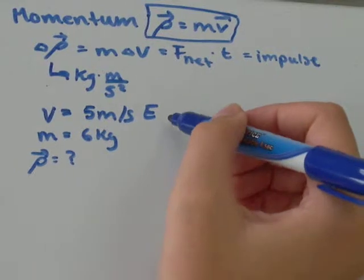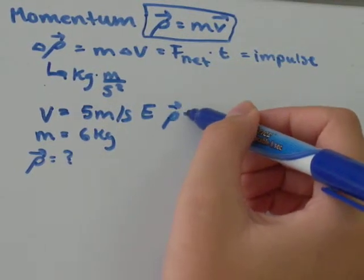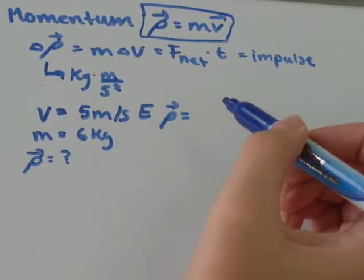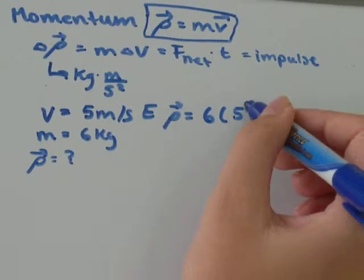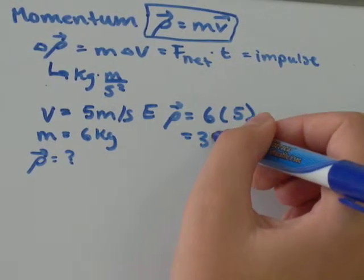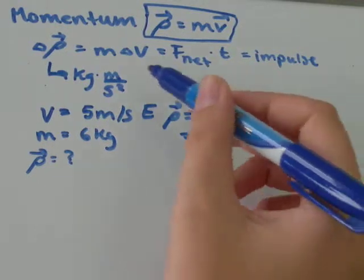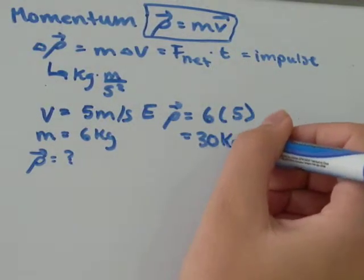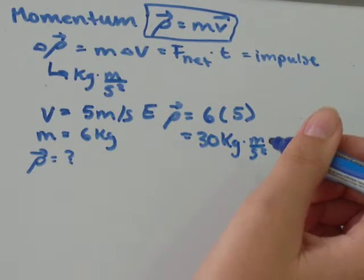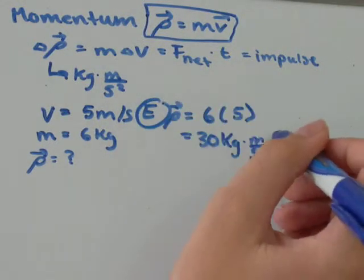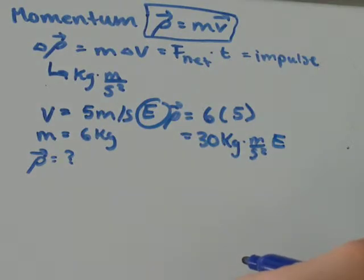All you need to do to find momentum is take the mass and multiply by the velocity. 6 times 5 is 30, so it would be 30 kilograms times meters per second, and there's a direction associated with it. In this example, our direction is going to be east. So that question is about the simplest one you could hope to find.